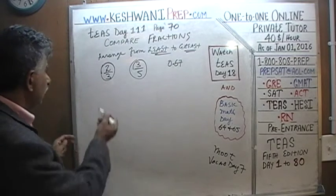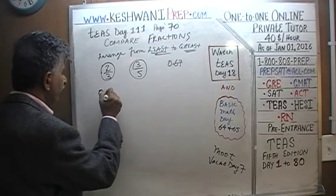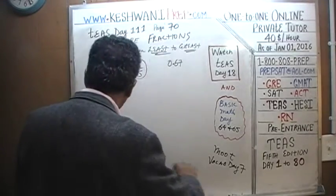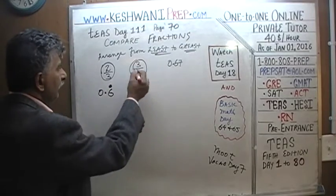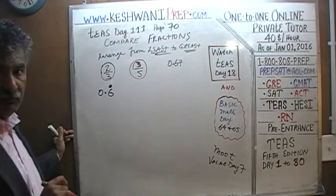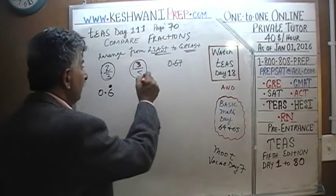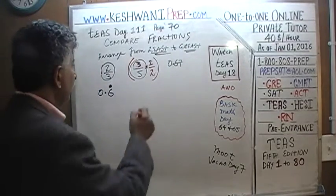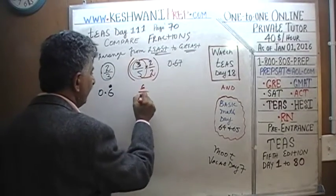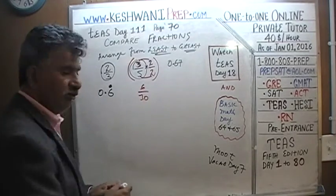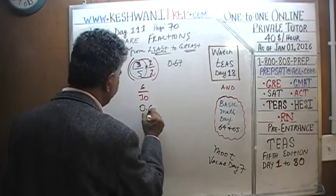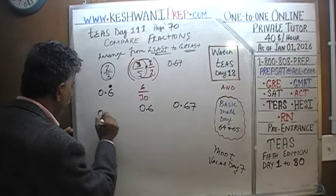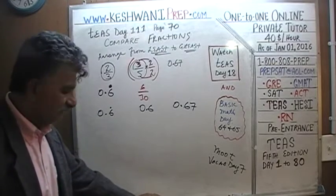2/3 — we know it's 0.6 repeating. We put a dot on top to indicate it doesn't end, it just repeats. What is 3/5? If you don't know your fifths, convert to tenths: 3 times 2 is 6, and 5 times 2 is 10, giving 6/10, which is 0.6. So we now have 0.6 repeating, 0.6 exactly, and 0.67.